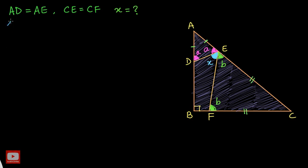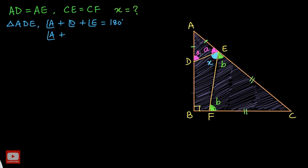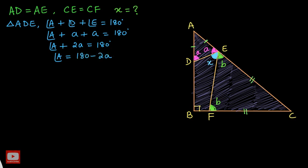Now I will take triangle ADE and apply the angle sum property. The sum of three interior angles is always 180 degrees. So angle A plus angle ADE plus angle AED equals 180 degrees. Angle ADE is A and angle AED is also A, so we have angle A plus 2A equals 180 degrees. Therefore, angle A equals 180 minus 2A.